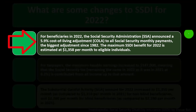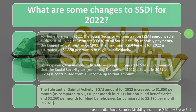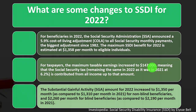For 2022, the SSA announced a 5.9% cost-of-living adjustment — COLA — to all Social Security monthly payments, the biggest adjustment since 1982. The maximum SSDI benefit for 2022 is estimated at $1,358 per month. For taxpayers, the maximum taxable earnings increased to $147,000, meaning the Social Security tax rate remained the same at 6.2%, applied to all income up to that amount.